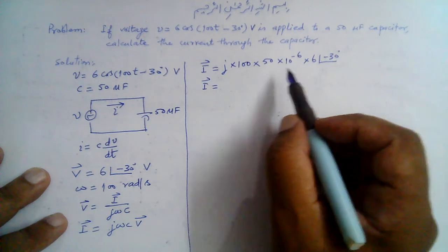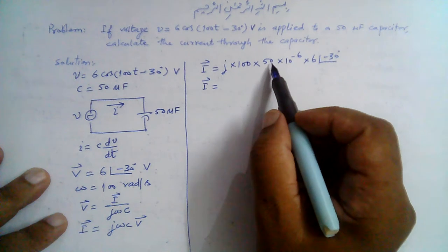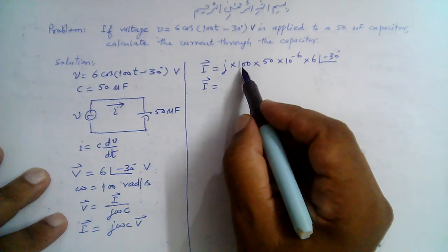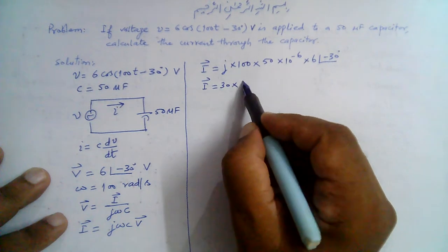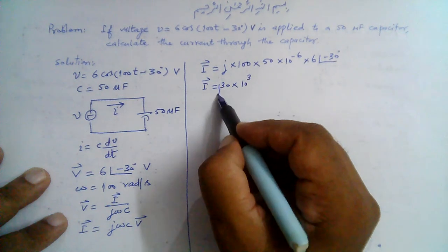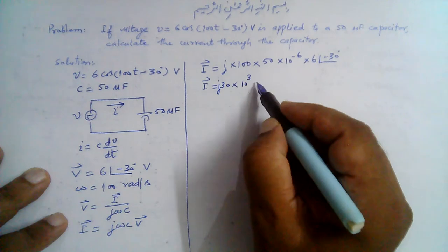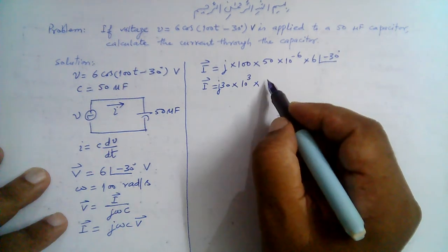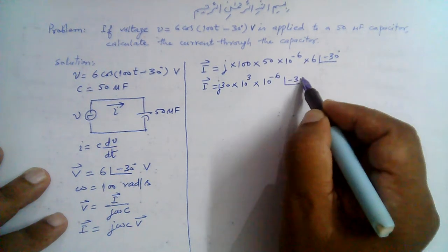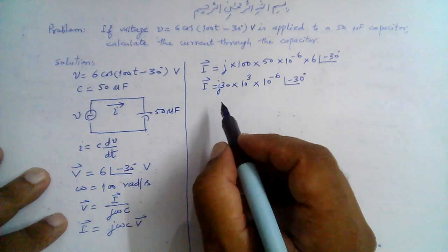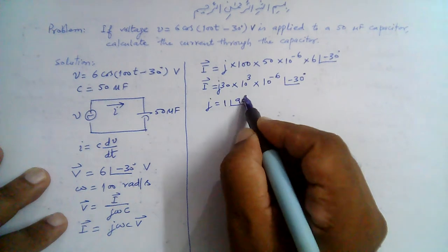So this will be 6 × 5 = 30, so 30 × 50 = 300, which is 30 × 10^3. And we already have j here: j × 30 × 10^3 × 10^-6 ∠-30°.